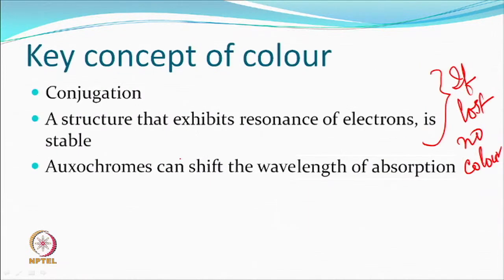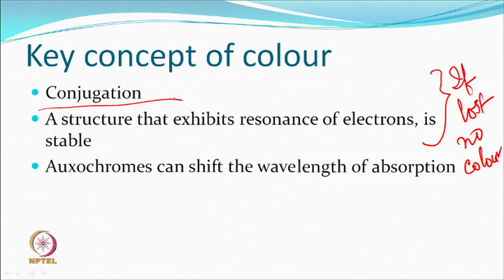Other than unsaturation in the molecules, there should be conjugation — conjugation means alternate double and single bond availability in the molecule. If this is nicely arranged, transitions become easy. It is also important that the molecule exhibits resonance — one resonating structure versus another — which also means energy absorption going from one stable state to another. This helps in making the dye or pigment a stable chromophore.